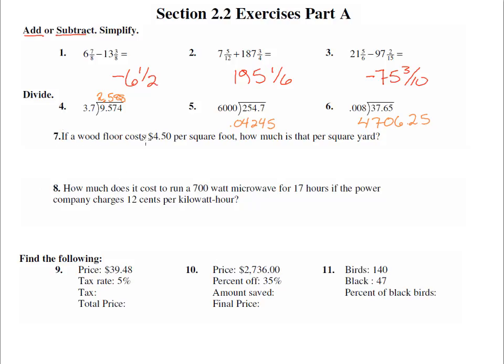Number 7: If a wood floor costs $4.50 per square foot, how much is that per square yard? Now, if we go back and look in the book, we note that it is 9 square feet that equals 1 square yard. It's not a 3 to 1 ratio. And a reminder of how that works. If you have 1 square yard, that's 3 feet this way and 3 feet this way. So when you connect them all up in a square, you get 1, 2, 3, 4, 5, 6, 7, 8, 9 square feet.